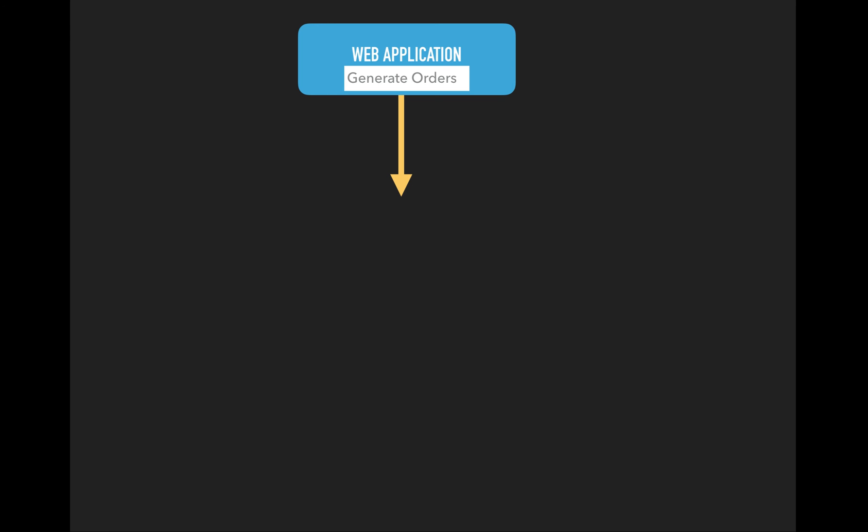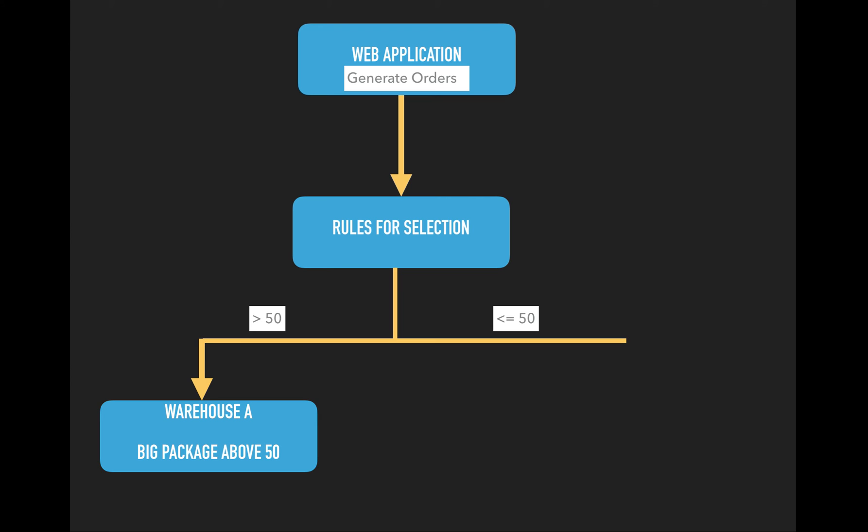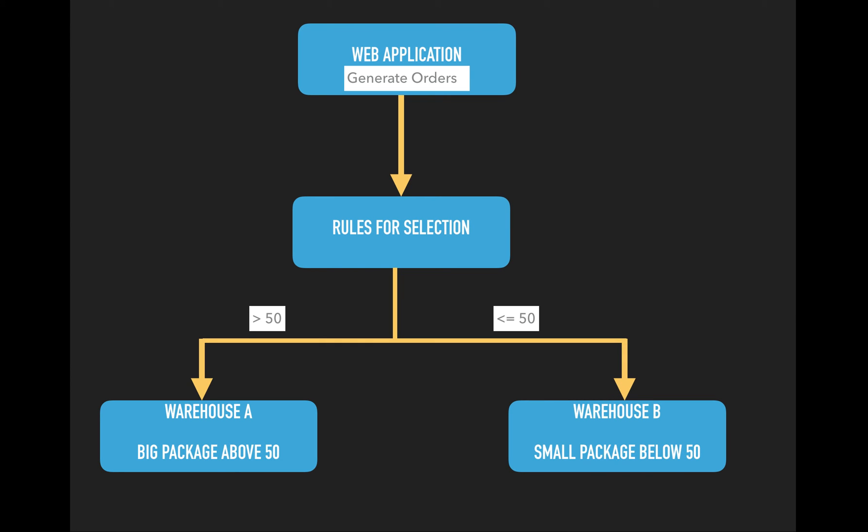So what exactly are we trying to do in our demo to see how BPM works in Mule? We have a web application which will generate orders. I am not going to create the actual web application - I will be writing a quad scheduler which will keep generating random orders with some random sizes. Based on the size of my order, I will be running some rules for selection - basically determining the weight of my order package. Based on the package weight, I will be sending it to two different warehouses. If it's greater than 50 it goes to warehouse A, which handles big packages above 50. If it's less than or equal to 50 it will go to warehouse B, which handles small packages below 50.